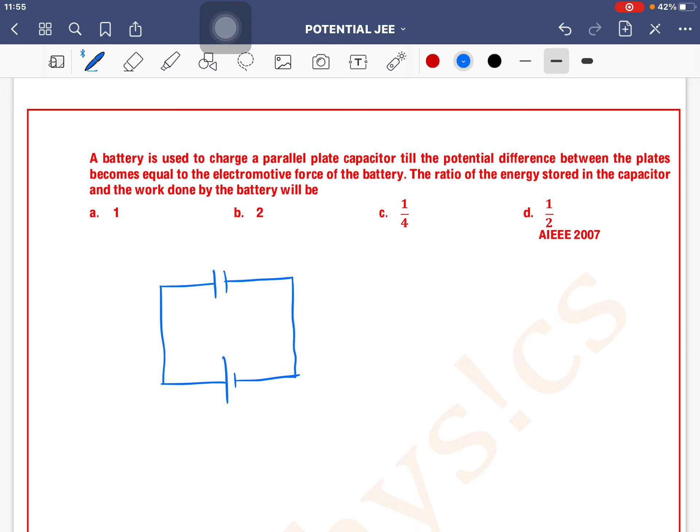Let's say this battery has EMF E and this capacitor has capacitance C. So here is energy stored by capacitor. The formula for energy stored by capacitor is E equals half CV squared.